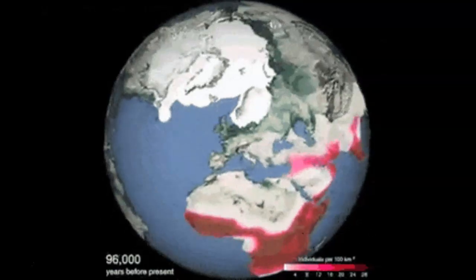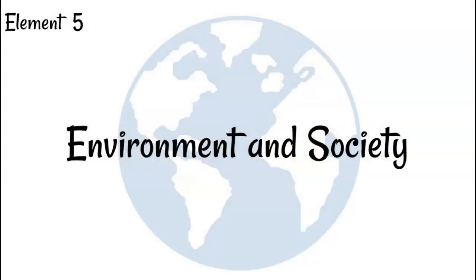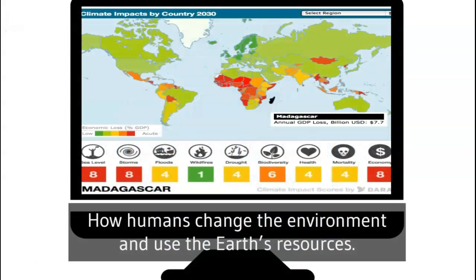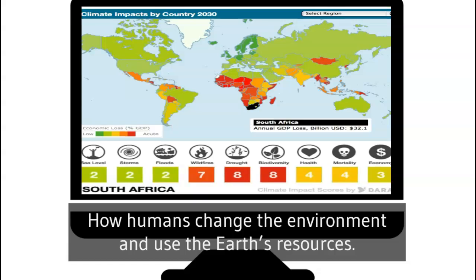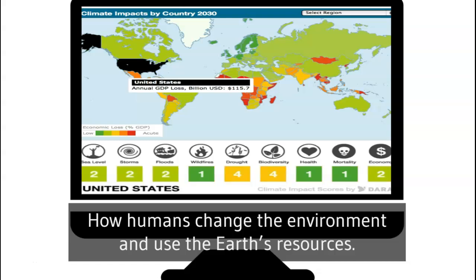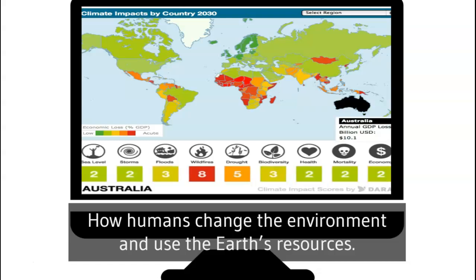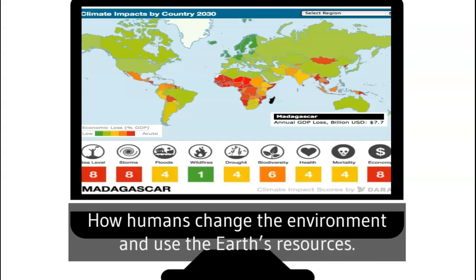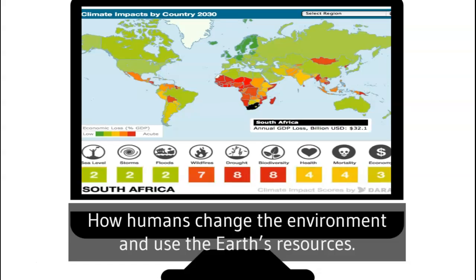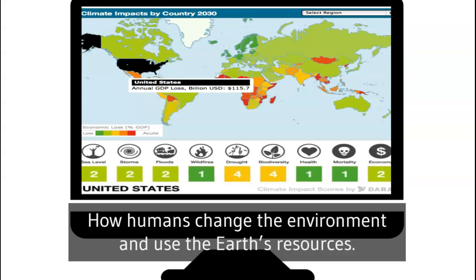The red and the white show how the population is changing. The fifth element is environment and society. We are constantly interacting with our natural environment. Human geographers study how the physical environment shapes the way people live and how human activities change our environment. This could be things like global warming, pollution, climate change, the building of cities, erosion, and flooding. Everything you see on the news has something to do with how we change the environment or use the Earth's resources.